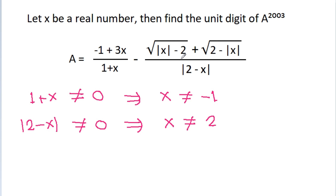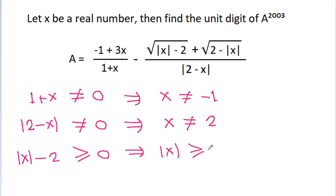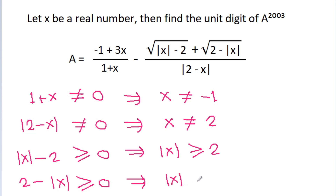A square root of a negative number is not defined. So mod x minus 2 must be greater than or equal to 0, and this implies mod x is greater than or equal to 2. Also, 2 minus mod x must be greater than or equal to 0, and this implies mod x is less than or equal to 2. So from these two conditions, we get mod x is equal to 2.